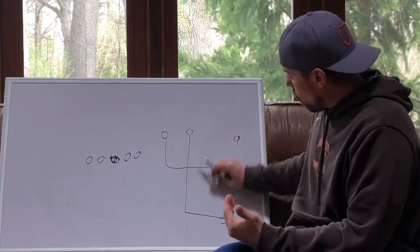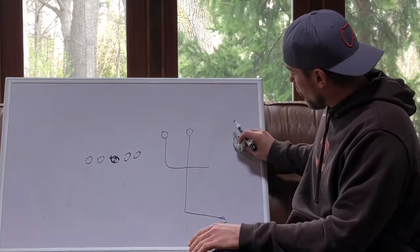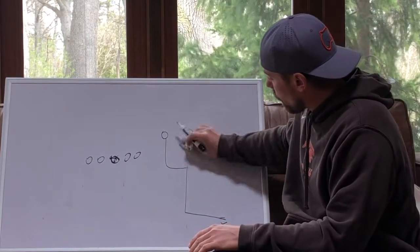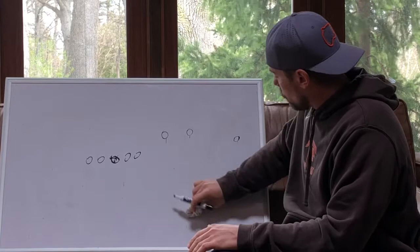So that's a simple vertical. Now I know the routes are horizontal there, but that is a vertical layering of the defense with simple high to low reads for the quarterback.